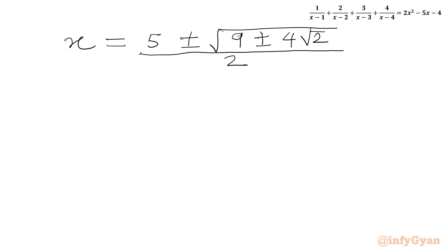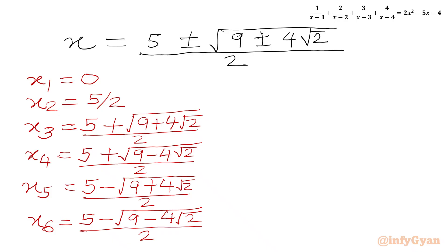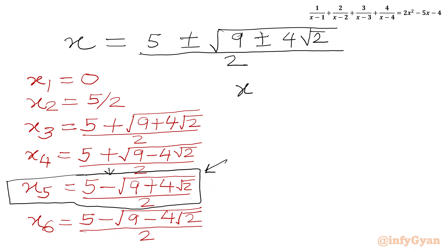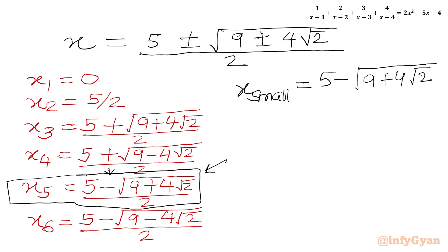So here we have four additional solutions, giving us six solutions in total from x1 to x6. Our first solution was x equal to 0 and the second was x equal to 5 over 2. To find the smallest positive root, we need the case where the quantity being subtracted is largest, with a minus sign in between. So the smallest positive root is x5 equal to 5 minus square root of 9 plus 4 root 2, all divided by 2. This is our final answer.